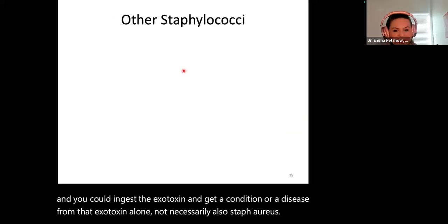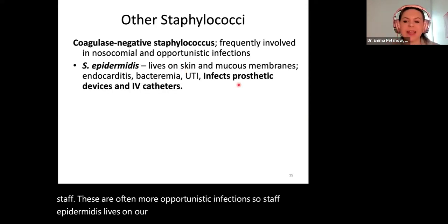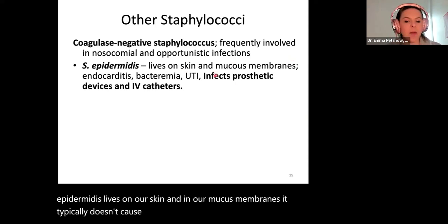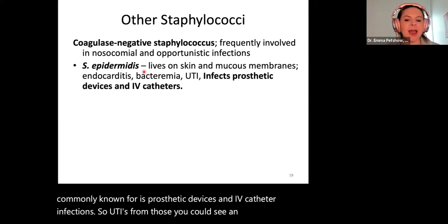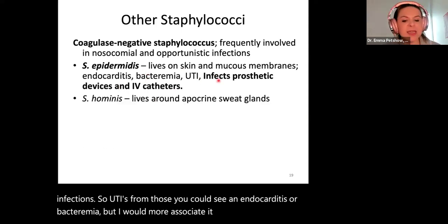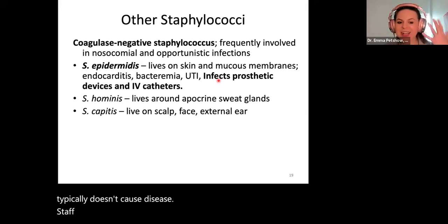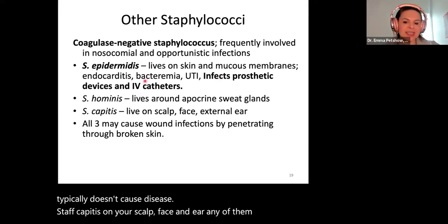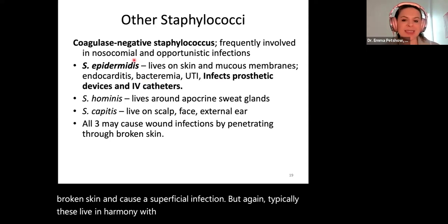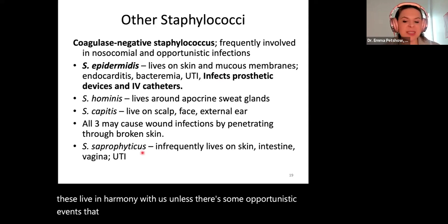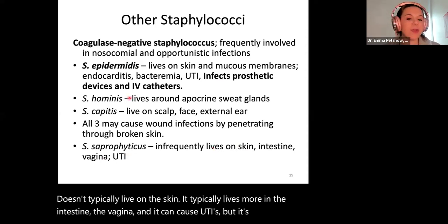Other staph species include coagulase-negative staph, which are often opportunistic infections. Staph epidermidis lives on our skin and mucous membranes and typically doesn't cause issues, but is known for prosthetic device and IV catheter infections, UTIs from those, and can cause endocarditis or bacteremia. Staph hominis lives around apocrine sweat glands and typically doesn't cause disease. Staph capitis lives on the scalp, face, and ear. Any of them can penetrate through broken skin and cause a superficial infection. Staph saprophyticus lives more in the intestine and vagina and can cause UTIs.